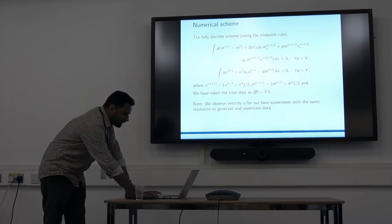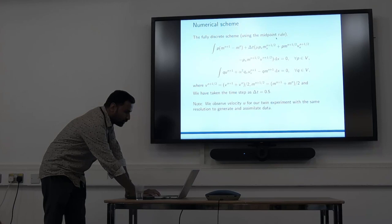This is the weak form of the equation. p and q are CG1 test functions. For time discretization we're using the midpoint rule. Here we're taking delta t is 0.5 and we are observing the velocity, not the density, for our twin experiment with the same resolution to generate and assimilate.